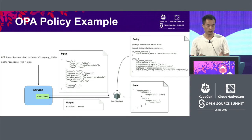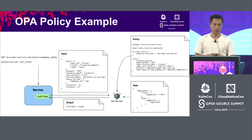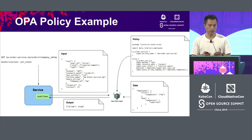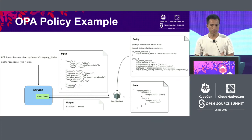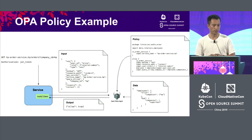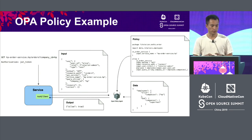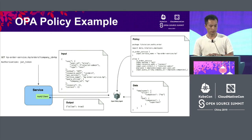These attributes are sent to Open Policy Agent. On the other side, Open Policy Agent is configured with our policy and data. The policy defines that a user is only able to access orders from their own company, and the data defines the relationship between users and companies. With these three pieces of information, Open Policy Agent is able to make an authorization decision and return the result to our service. That's how we enforce fine-grained access control in our L2 services.